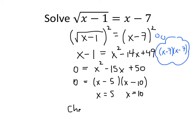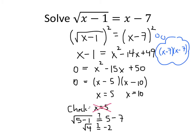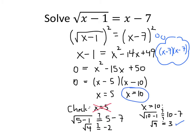Let's check. First, x equals 5: we get the square root of 5 minus 1, and we want to know if that equals 5 minus 7. But 5 minus 1 is 4 and 5 minus 7 is negative 2, and the square root of 4 is positive 2 — so x equals 5 is not a solution. Now check x equals 10: we get the square root of 10 minus 1, and we want to know if that equals 10 minus 7. Well, 10 minus 1 is 9, 10 minus 7 is 3, and the square root of 9 really is 3 — so x equals 10 is a solution, but x equals 5 is not.